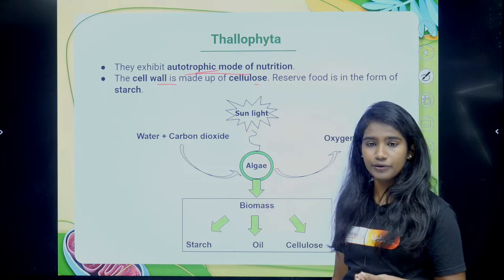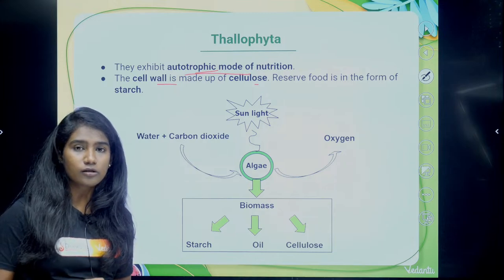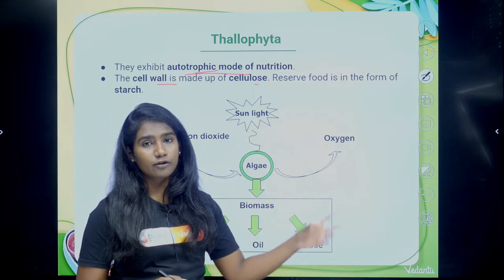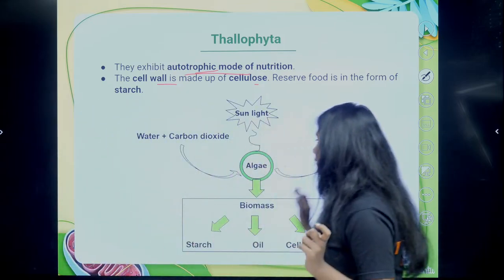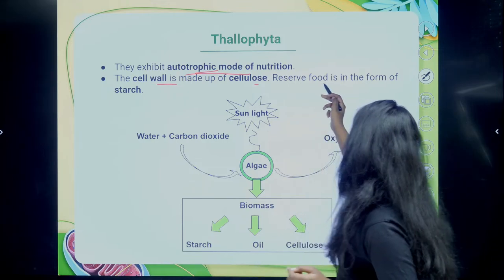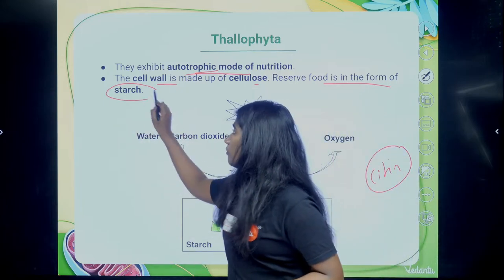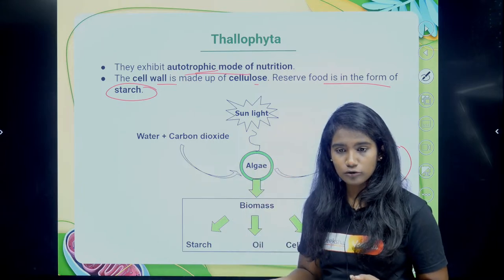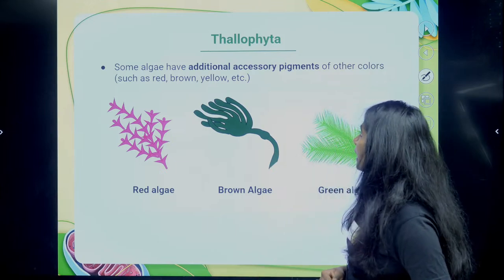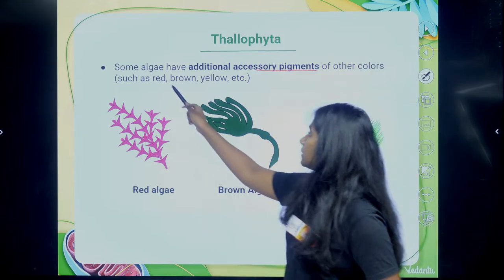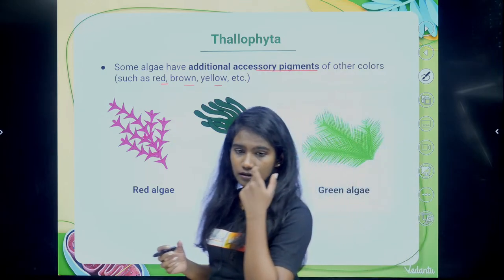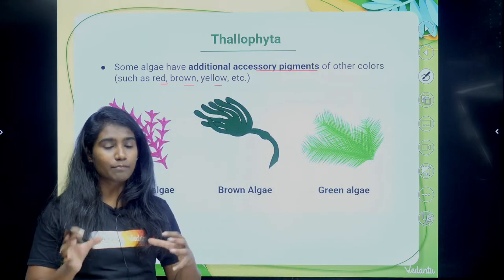Algae have cell walls made of cellulose, just like other plants. They also reserve excess food in the form of starch. Some algae have additional accessory pigments of other colors such as red, brown, or yellow — hence there is blue-green algae, red algae, and brownish-yellow algae. These accessory pigments are called carotenoids, which include carotene and xanthophyll.